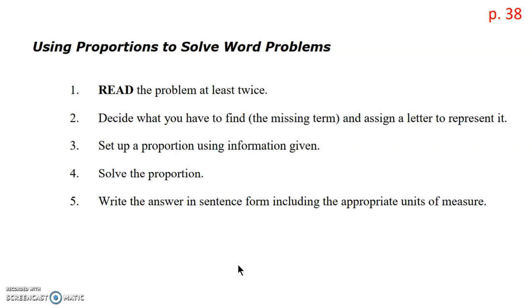Step two, we decide what you have to find. So you're looking for the missing term, and you get to assign a letter to represent it. So you can use x, you can use n, or you can use any letter you like to set up your proportion to solve for the unknown.